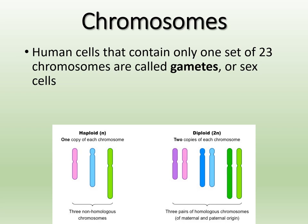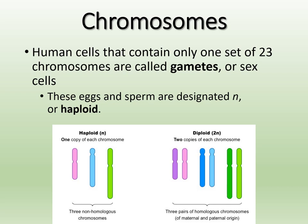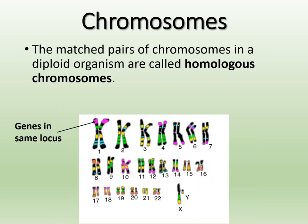Haploid cells, which contain only one set of the 23 chromosomes, are what we call gametes — sex cells used only for reproduction. Females produce eggs as their gametes and males produce sperm, and both are haploid cells designated as N. They come together to create 2N, or diploid, and then the cells can start dividing and produce new life. We'll talk more about gametes and meiosis in the next lecture.